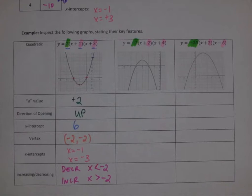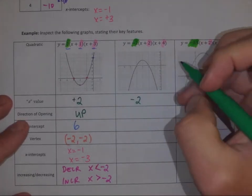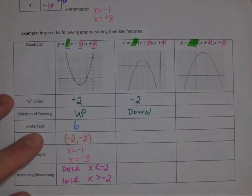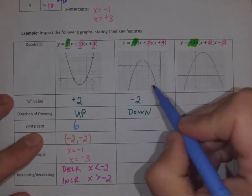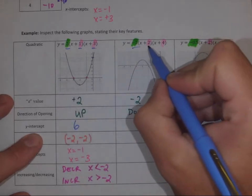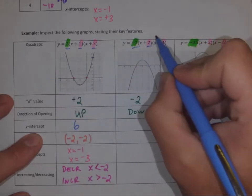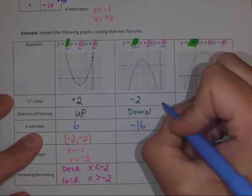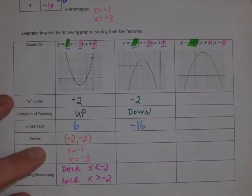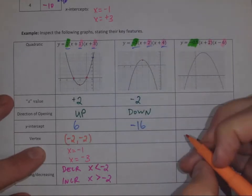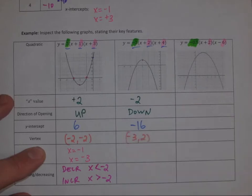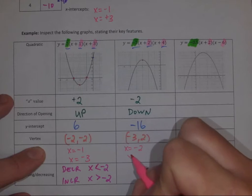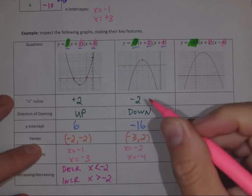Following the patterns: a value negative two, direction of opening is down. The y-intercept is off the graph, but following the pattern: two times four is eight, times negative two is negative sixteen — there it would be. The vertex is at negative three, two.